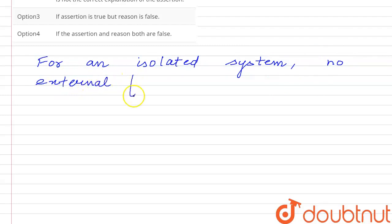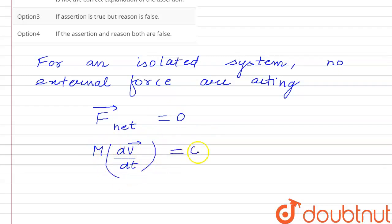No external forces are acting, and internal forces cancel out. So F_net equals zero. We can write that mass multiplied by dv/dt, which is F_net, equals zero.